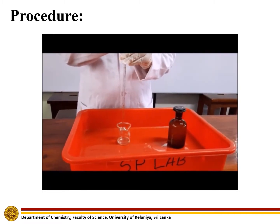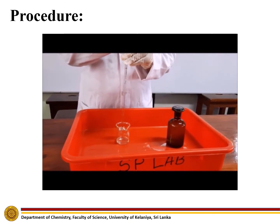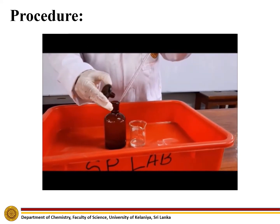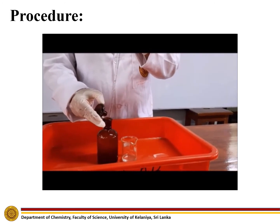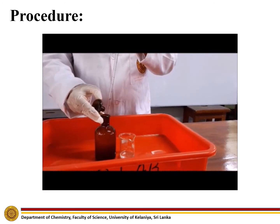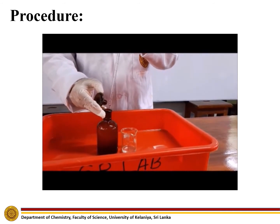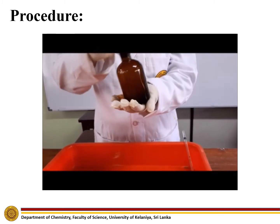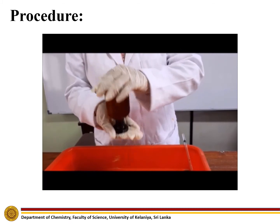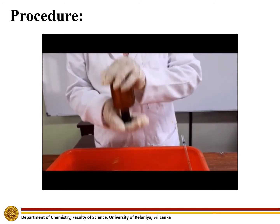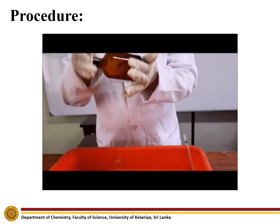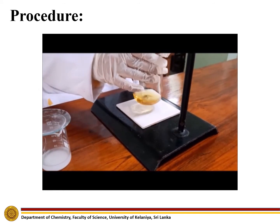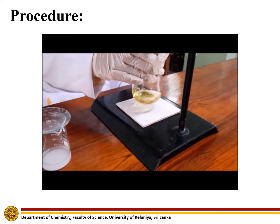Then, add 1 ml of sulphuric acid to the fixed water sample. Then, invert the sample bottle a few times. Even though we perform this experiment under laboratory conditions, steps up to this point have to be done at the site of sampling and the water sample has to be collected directly from the water body being analysed. Afterwards, take 25 ml of the water sample and titrate it with the standardised sodium thiosulphate solution using starch as the indicator.